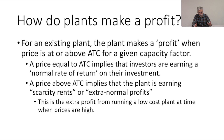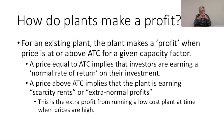A price equal to average total cost implies that investors are earning a normal rate of return on the plant — they're getting paid what they need to justify investing in the plant. A price above average total cost implies that the plant is earning extra profits, extra normal profits. We're going to call these extra normal profits scarcity rents — that's economist talk for profits above the amount needed to justify investment in this particular plant.